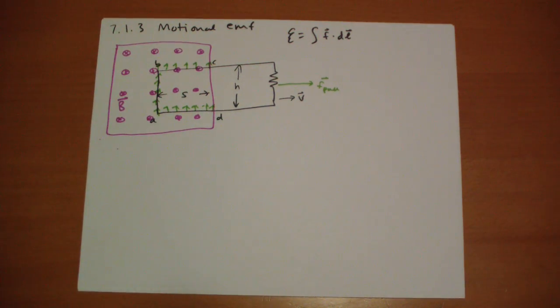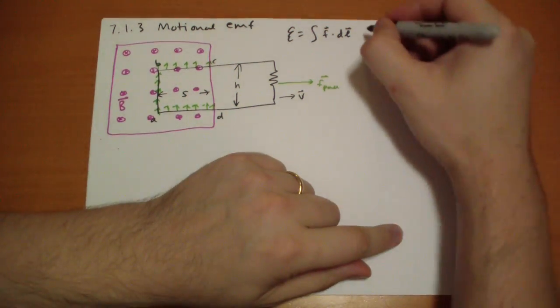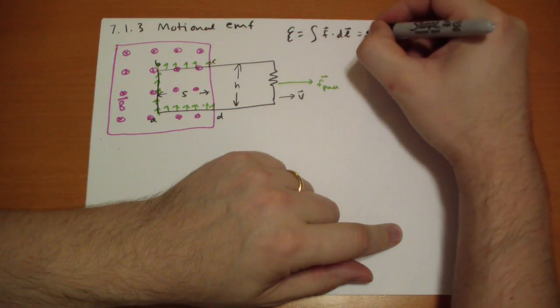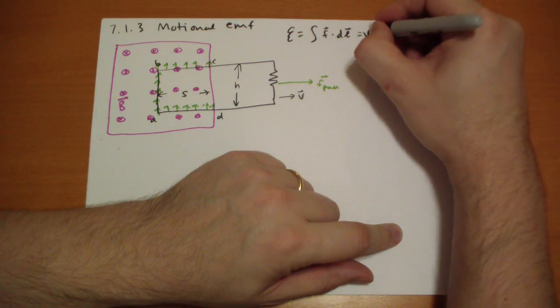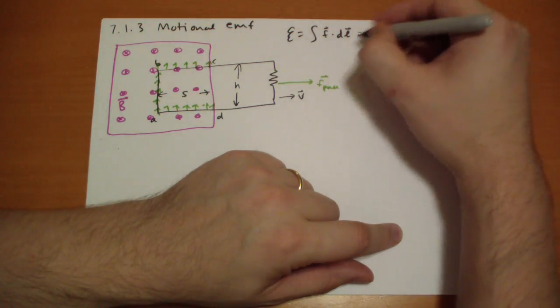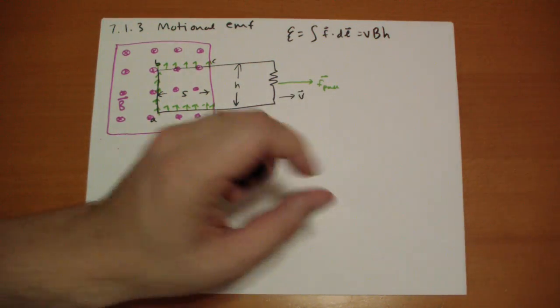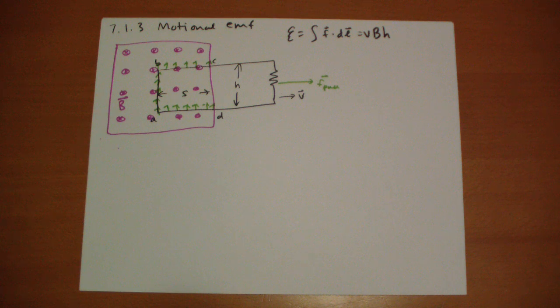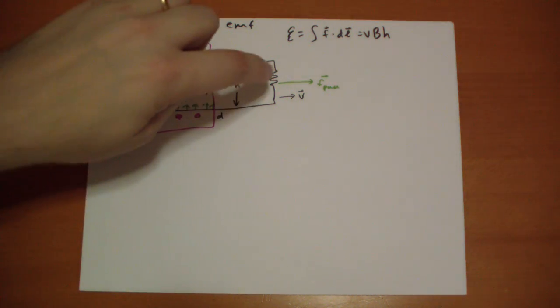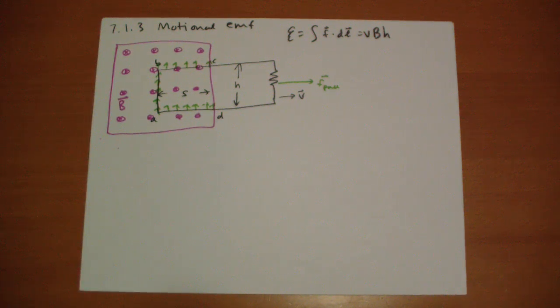But here, the force is directly aligned. And so, the EMF will be just equal to the force, which is qv cross b, which is v, the velocity times the magnetic field b, and the distance it travels is h. So vBh is our EMF. And this is an EMF just like a battery would provide or anything else that will actually drive current through the resistor.